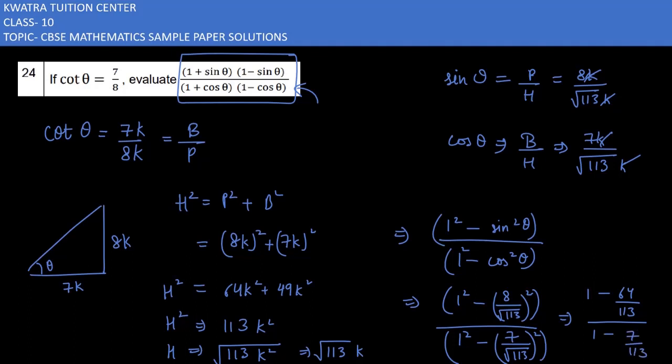Taking LCM: numerator becomes (113 - 64)/113 = 49/113. Denominator becomes (113 - 49)/113 = 64/113. In division, 113 cancels. The value is 49/64.